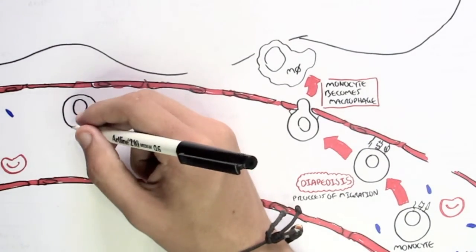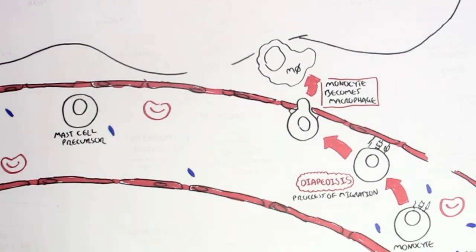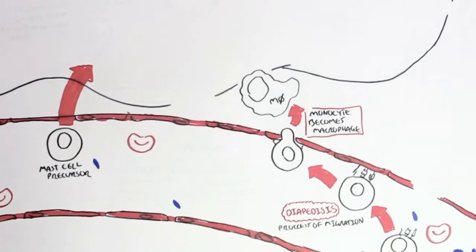The mast cell precursor will also enter the tissues through the process of diapedesis. The mast cell precursor, which originated from the bone marrow, when it migrates into a tissue, it will become a mast cell.